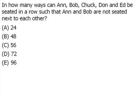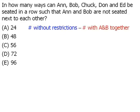To determine the total number of arrangements where Ann and Bob are not seated together, we're going to first determine the total number of arrangements where there are no restrictions whatsoever. From this number, we're going to subtract all of the arrangements where Ann and Bob are seated together. The result will be just those arrangements where Ann and Bob are seated apart.